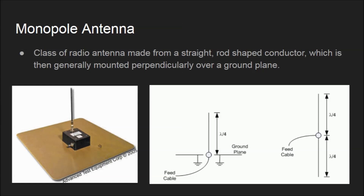The first antenna we'll talk about is the monopole antenna. This is a class of radio antenna made from a straight, rod-shaped conductor, which is generally mounted perpendicularly over a ground plane. The bottom-left picture shows a monopole antenna with a singular conductor rod placed perpendicularly over a large, rectangular ground plane. To the right of that diagram shows a quarter-wavelength monopole antenna, and to the right of that shows how this diagram behaves due to image theory and reflection.